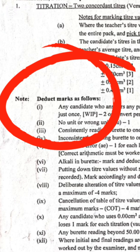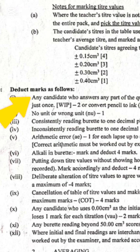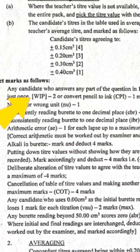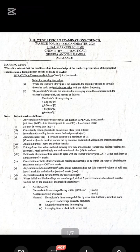I will go down to where you see 'Notes — the deductible marks as follows.' Number one: any candidate who answers any part of the questions in pencil loses two marks, just once — we always call it WIP, that's minus two. Or converting pencil to ink is CPI, that's minus one. If you are writing with pencil, that's minus two.